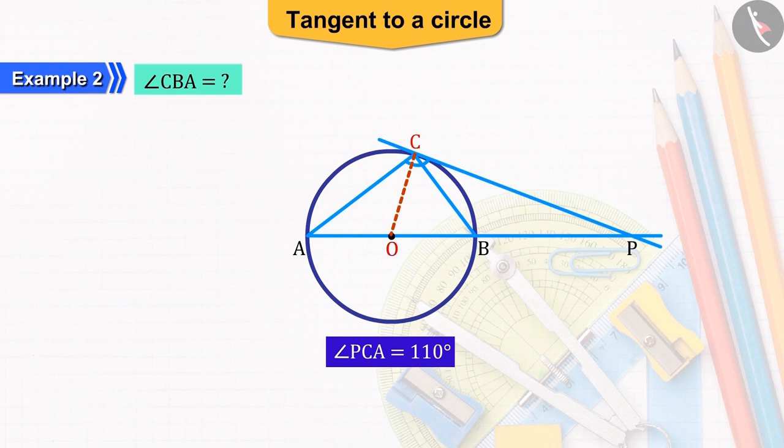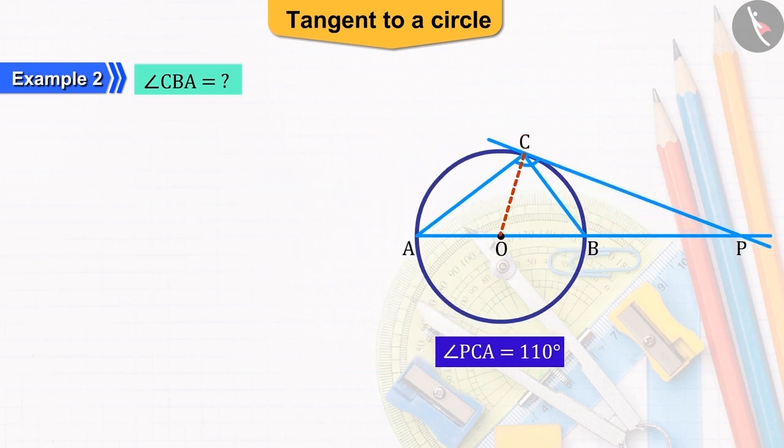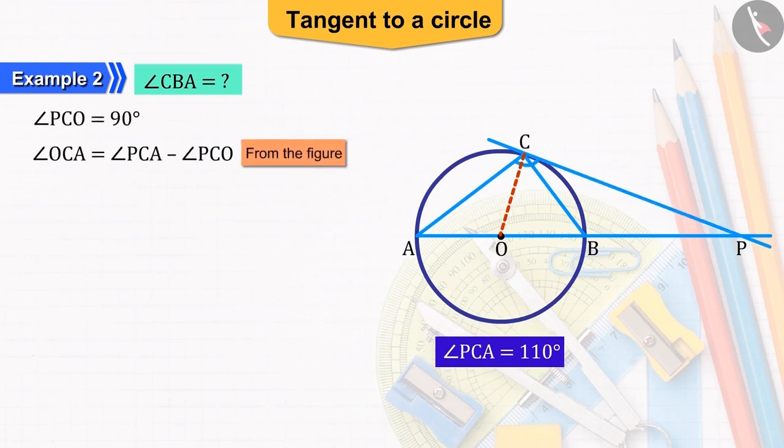Let us join point C to the centre O. Now, you can see here that OC and CP are the radius and tangent of the circle at point C respectively. Thus, angle PCO will be right-angled, with the help of which we can find the value of angle OCA.